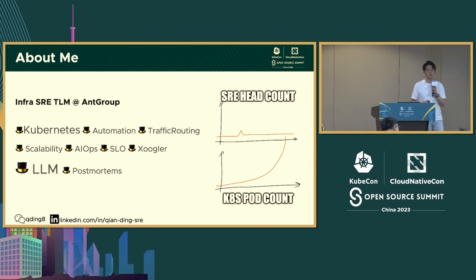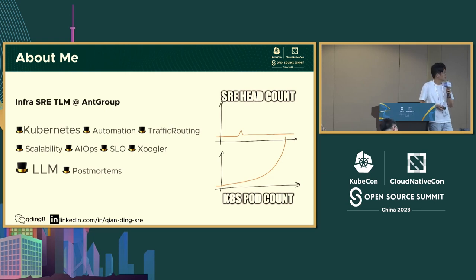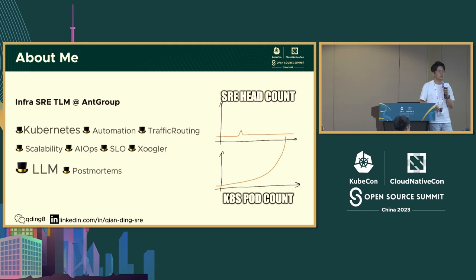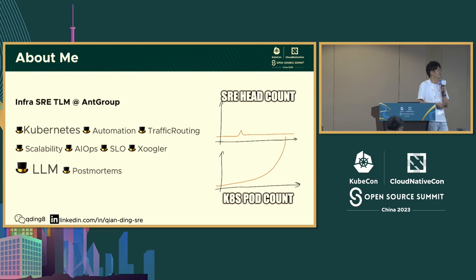As an SRE, we wear different hats during our day-to-day life — we write automation programs to optimize our toils and operations, and sometimes we do firefighting to handle production issues. In the past few years, we've seen huge growth in our cluster size and port size, but we remain with very fixed SRE headcount. So we need to seek every help we can to facilitate our day-to-day life. This year, language models are a hot topic, so we are trying to tackle this issue with them.